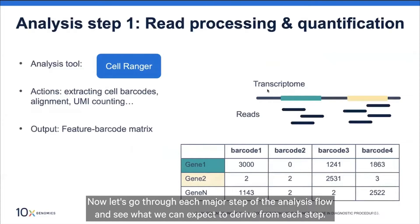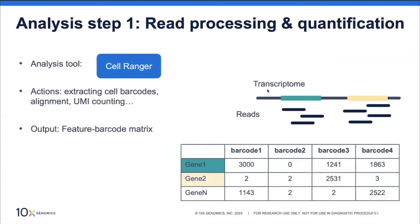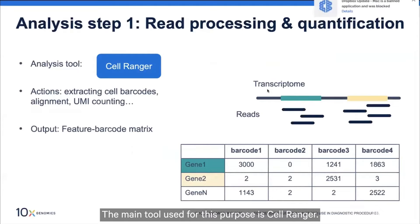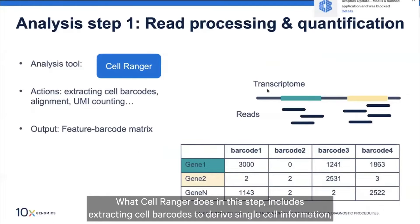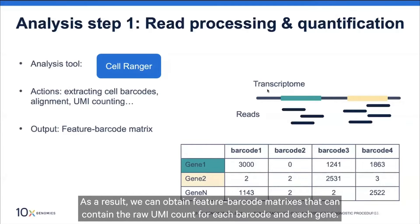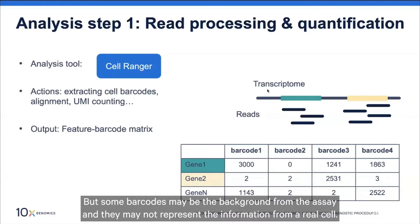Now let's go through each major step of the analysis flow. After we obtain the FASTQ files, the first step is preprocessing and quantification. The main tool used is Cell Ranger, which extracts cell barcodes to derive single cell information, aligns reads to the transcriptome, and counts UMIs. As a result, we obtain a feature-barcode matrix containing the raw UMI counts for each barcode and each gene, though some barcodes may be background and may not represent a real cell.